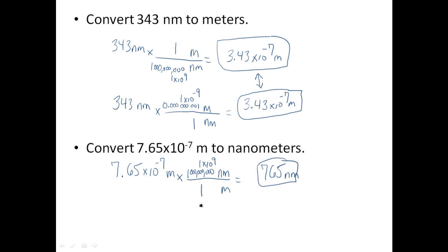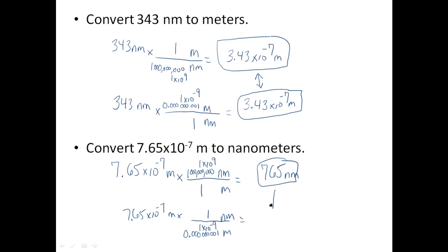We could also express this the opposite way. Start with 7.65 times ten to the negative seventh meters, and again put meters on the bottom, nanometers on top. Now we say one little itty bitty nanometer is a fraction of a meter, or one times ten to the negative ninth meters. Either way, you come up with the same exact answer — 765 nanometers — because both conversions are equivalent.